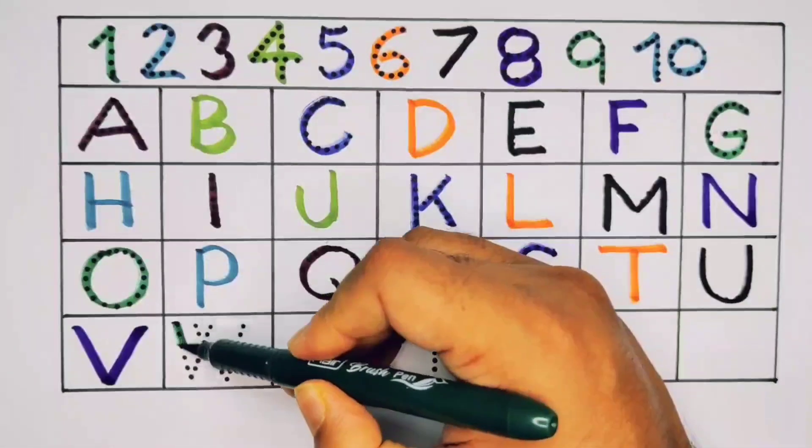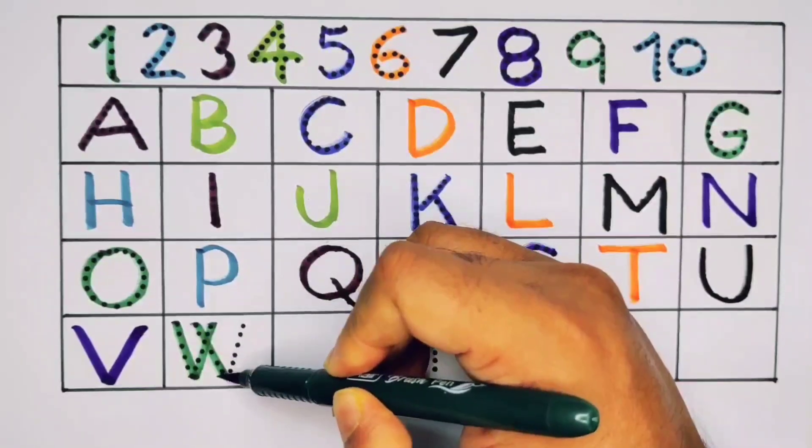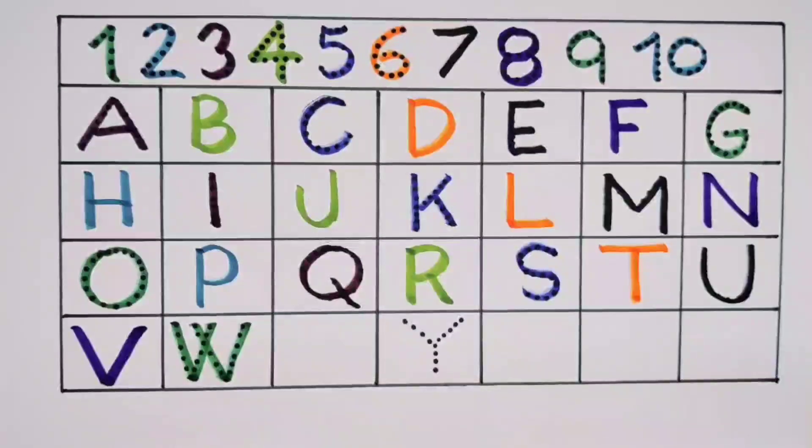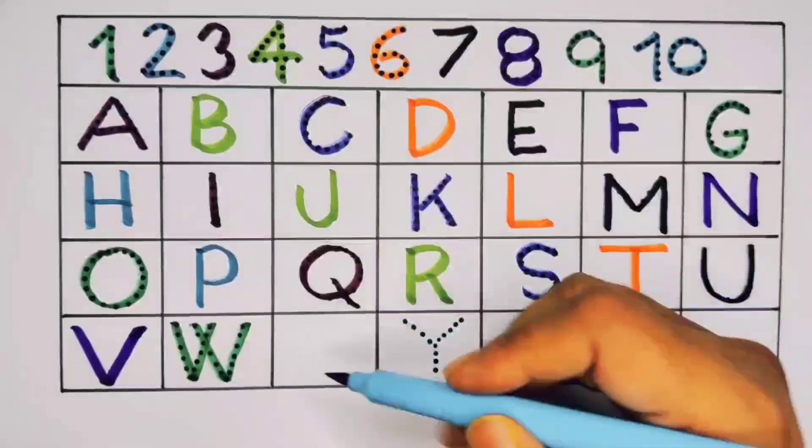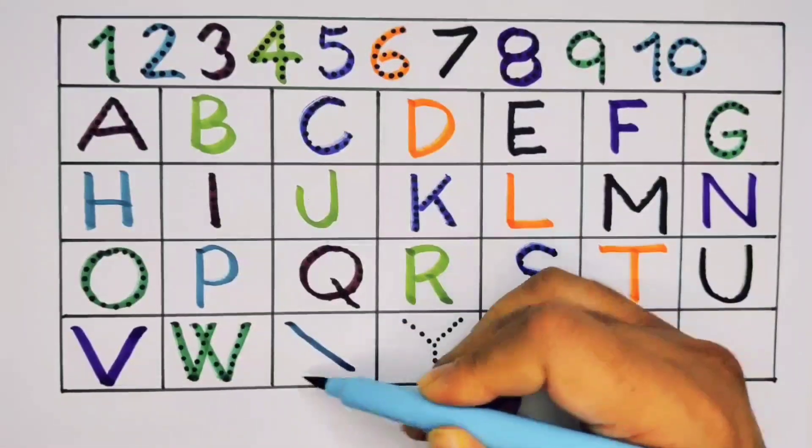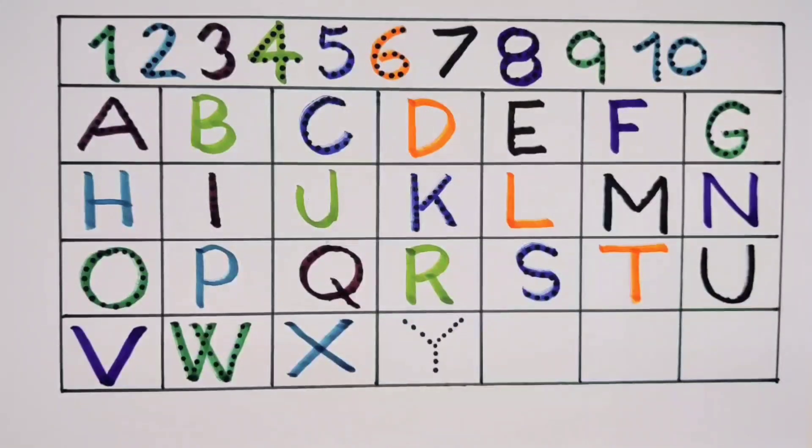Now W. W for watch. W for watch. What will next? This is X. X for Christmas tree. X for Christmas tree.